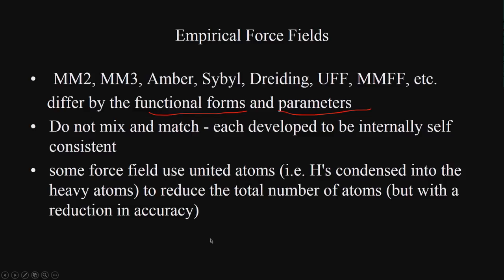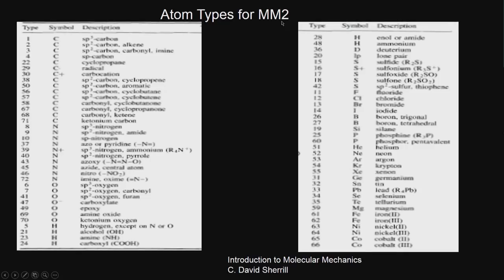Looking at MM2, it has many different types of carbons: sp3 carbon, sp2 carbon in alkene, sp2 carbon in carbonyl or imine, sp carbon, cyclopropane carbon, radical carbon, carbocation, sp2 carbon in cyclopropene, sp2 carbon in aromatic systems, and sp3 carbon in cyclobutane.